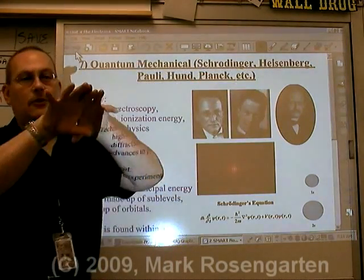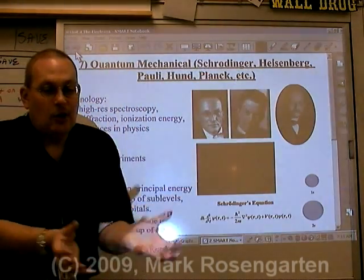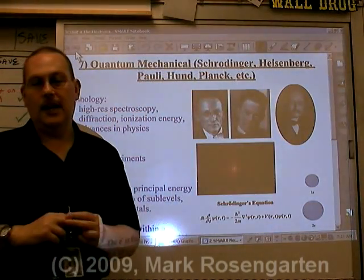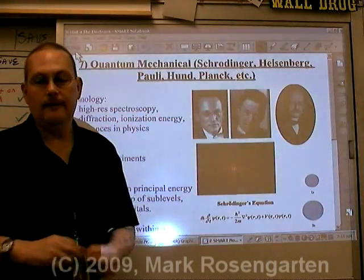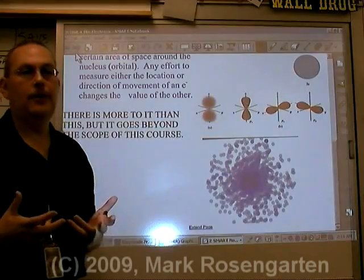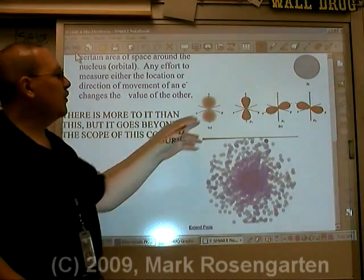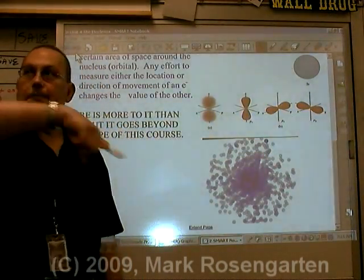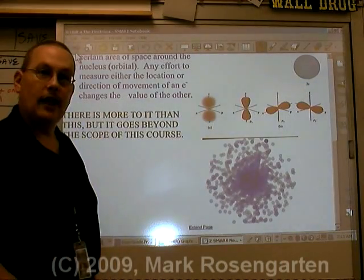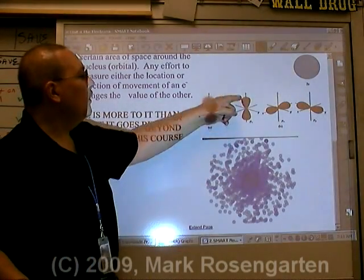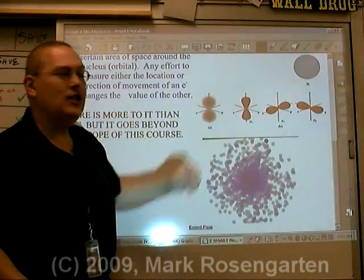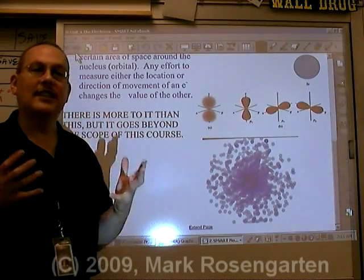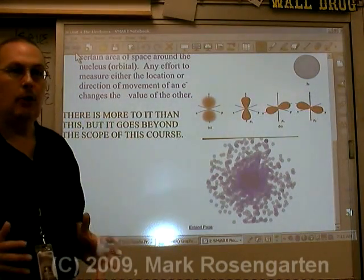All you can do is define an area of space around the nucleus where you're most likely to find an electron. This has led to the orbital theory. Electrons are found in orbitals around the nucleus — not orbiting like planets around the sun. The orbitals describe regions of space where an electron is most likely to be found at any given moment.